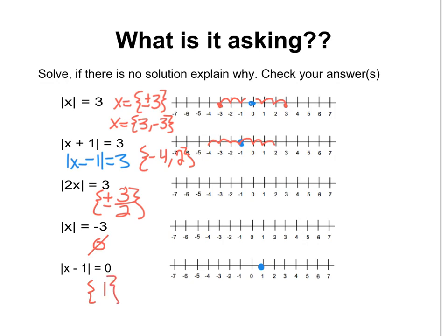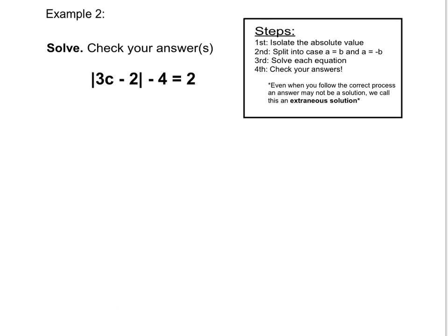Notice that some of our cases had two solutions, some had no solutions, and this one had one solution. Now let's look at some step-by-step examples. We want to solve this equation. Our steps are that we first isolate the entire absolute value.